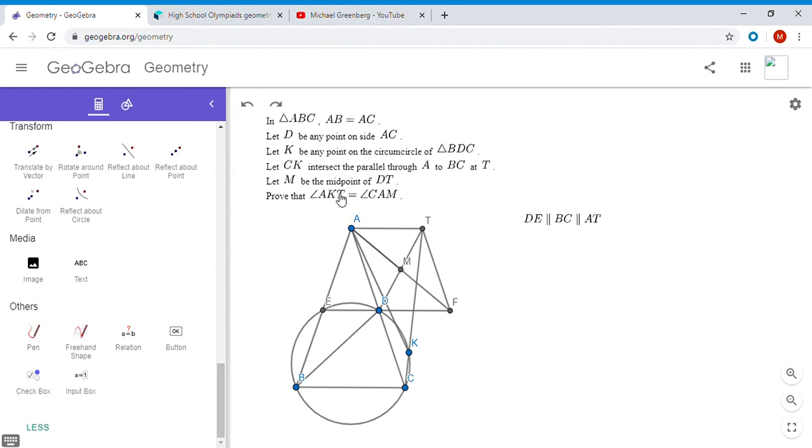We want to show AKT is equal to CAM. Well, CAM is equal to CAF, but since AC and FT are parallel, that's AFT. So CAM is AFT. We want to show that AFT is AKT, but that would be the same as showing that AKFT is a cyclic quadrilateral. So how do we go about showing that AKFT is cyclic?